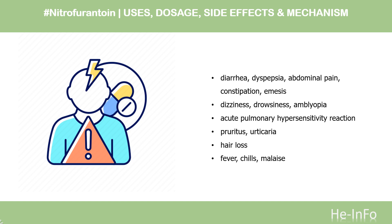Side Effects: The most common side effects with nitrofurantoin are nausea, headache, and flatulence. Less common adverse events, occurring in less than 1% of those taking the drug, include gastrointestinal effects: diarrhea, dyspepsia, abdominal pain, constipation, and emesis.